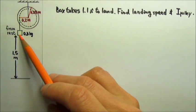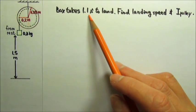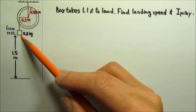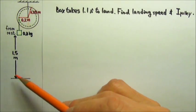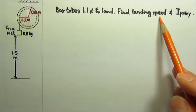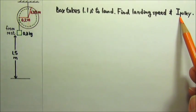After released from rest, the box takes 1.1 seconds to land 1.5 meters below. Find the landing speed of the box and the rotational inertia of the pulley.